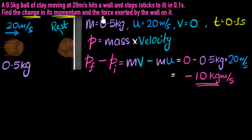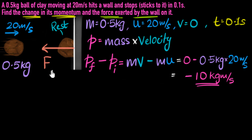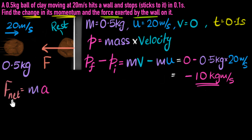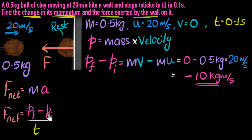The next part asks us to calculate the force exerted by the wall on the clay. When the clay hits the wall and comes to a stop, the wall must be pushing on the clay — that's why it's slowing down. To find the force, whenever we have details of motion and need to find force, I like to go back to Newton's second law: force equals mass times acceleration. But we can also use F equals change in momentum divided by time.